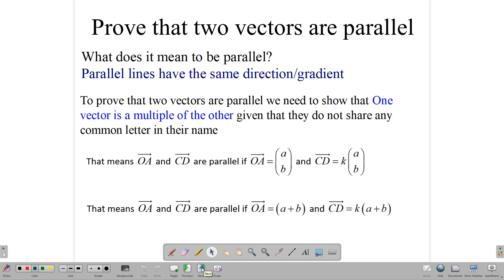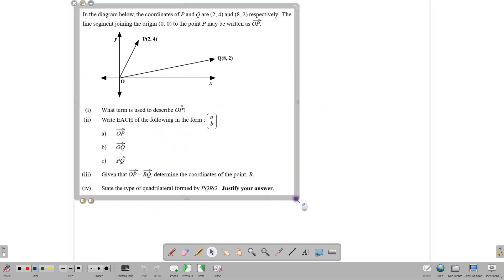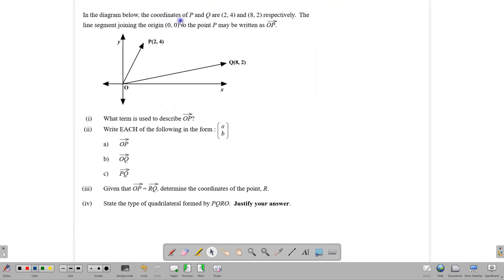So let's look at some CSEC questions that we can use to bring out this idea. Our first question here shows us that in the diagram, the coordinates of P and Q are 2, 4, and 8, 2. The line segment joining the origin 0, 0, and the point P may be written as OP. So the first question is to describe OP. What term is used to describe it? And we notice that P is connected to 0, 0. And we know that if a vector is connected to 0, 0, then we call it a position vector. So the term used to describe OP is a position vector.